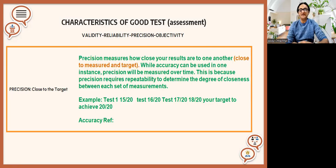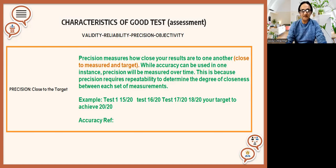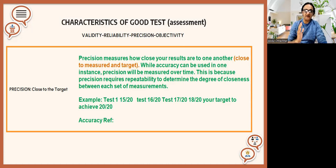Precision — in language we call it accuracy, but in the context of testing the term is quite different. Precision means how close you are to the results. Because we set targets in education, in a class, and we strive and plan to achieve the maximum of these targets.